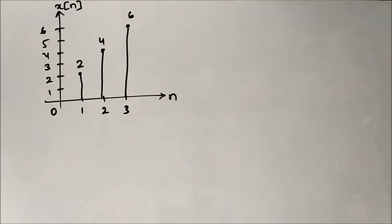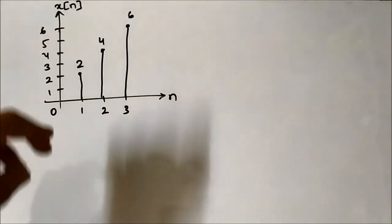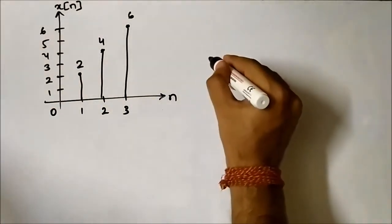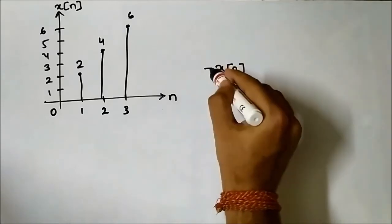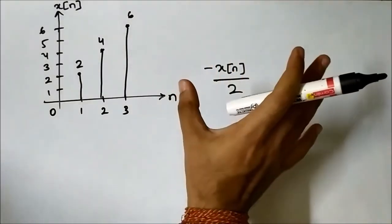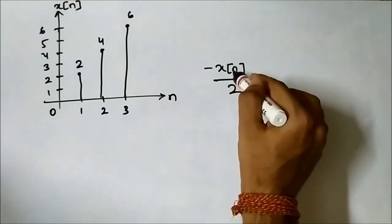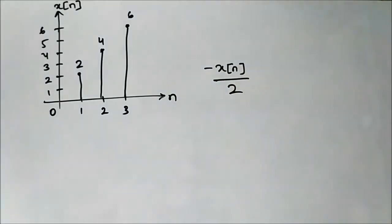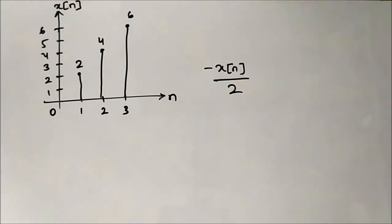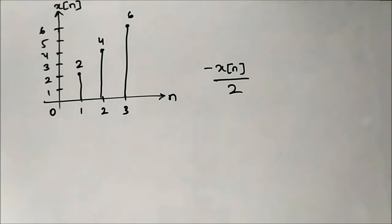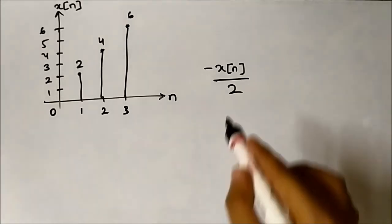Here we have a discrete time signal with amplitude at n=1 which is 2, at n=2 it is 4, and at n=3 it is 6, and we have to perform the operation -(1/2)x[n]. Because of the minus sign, inversion will happen, and because of the multiplication by the factor 1/2, amplitude scaling will occur. Since the scaling factor is fractional — 1/2 — there will be attenuation; the amplitude of the original signal will decrease.